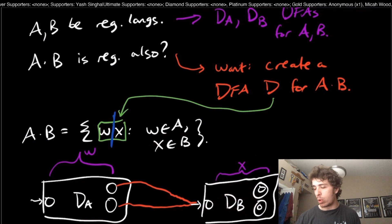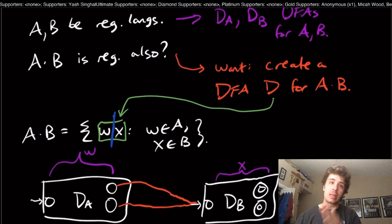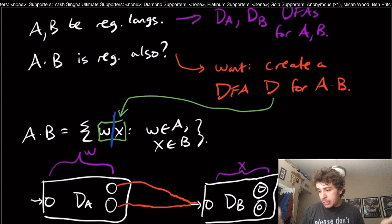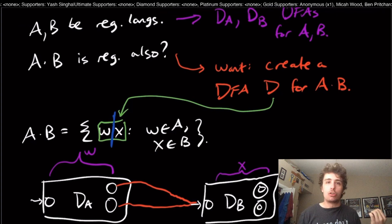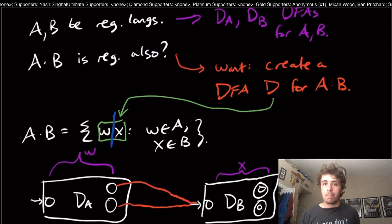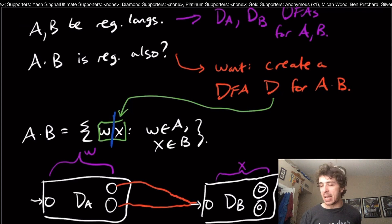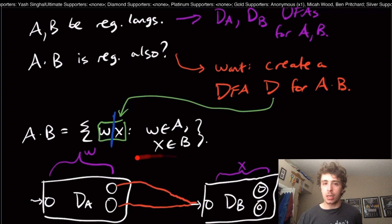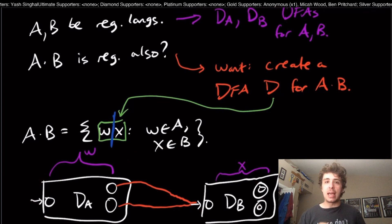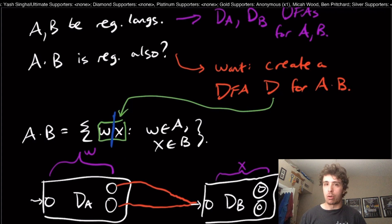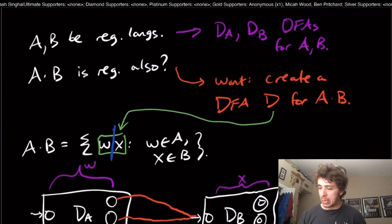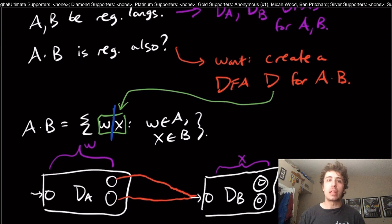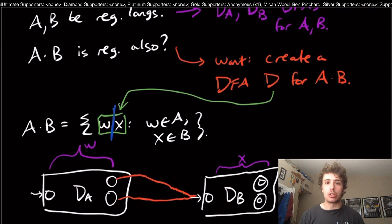That tells us that obviously this approach cannot possibly work. But a red herring is that just because this approach doesn't work, that does not show that every possible approach cannot work. Some of my students say, 'Okay, well this approach doesn't work, therefore regular languages are not closed under concatenation.' That's not true.